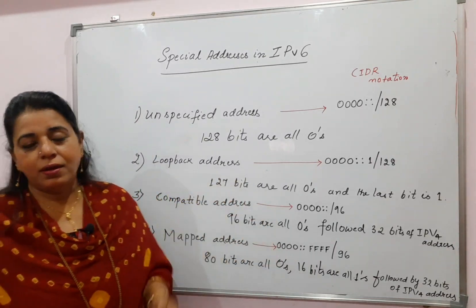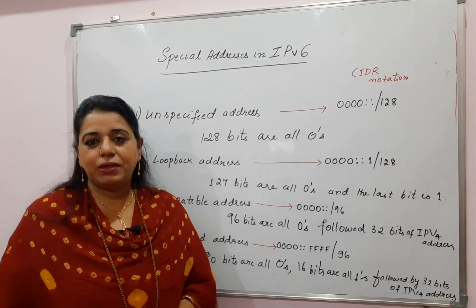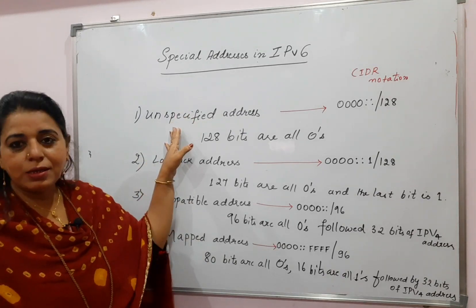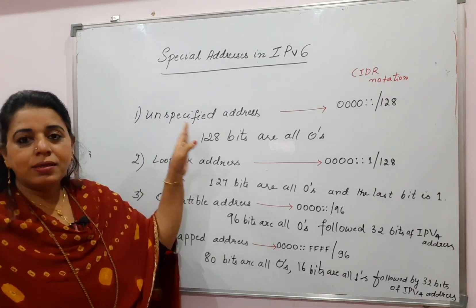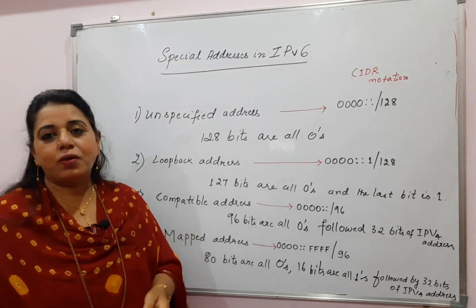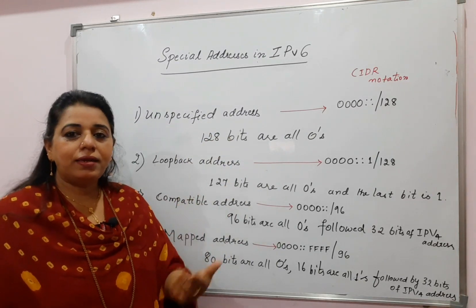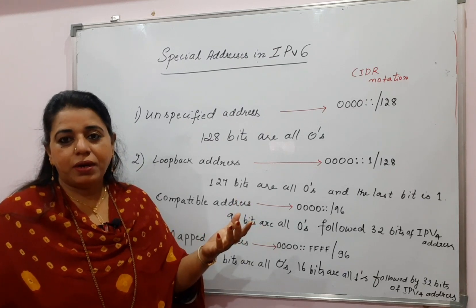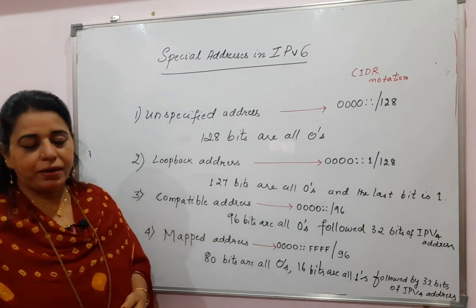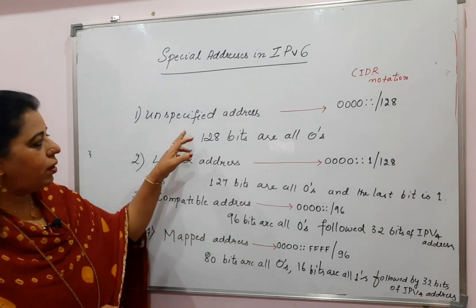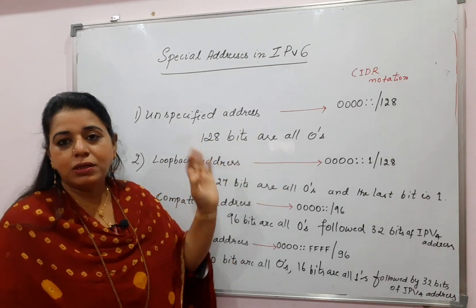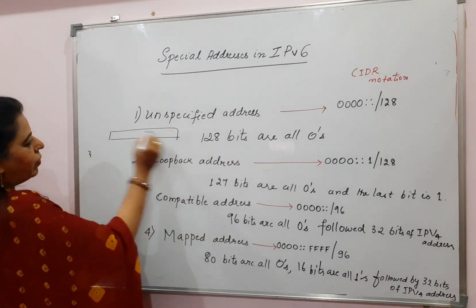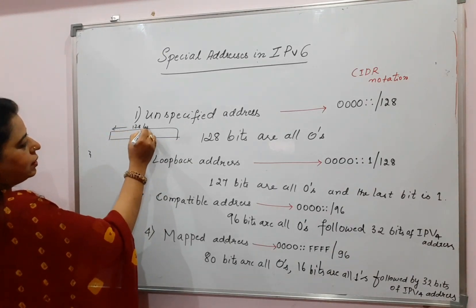Here we shall see which are the different special addresses available in IPv6. The first one in the list is called the unspecified address. This is similar to the this-host address of IPv4. Whenever a client does not know its own IP address, it will send an inquiry to the DHCP to get the IP address. It consists of all zeros — the complete 128 bits are all zeros.